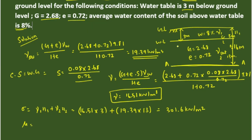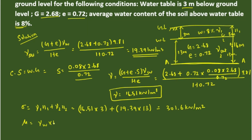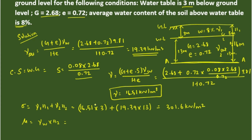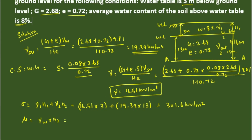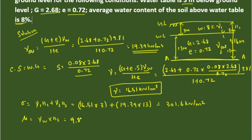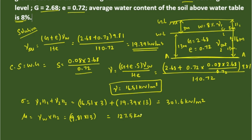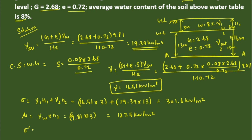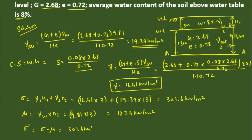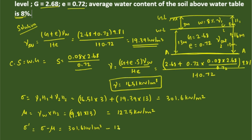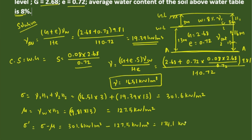Next is the neutral (pore water) pressure. Water exists only in the 13 m depth below the water table, so we take gamma_w × H2 only. Note: if there were capillary pressure above the water table, we would include it with a negative sign, but that is not the case here. So neutral pressure = 9.81 × 13 = 127.5 kN/m². The effective stress sigma' = total stress − pore water pressure = 301.6 − 127.5 = 174.1 kN/m².